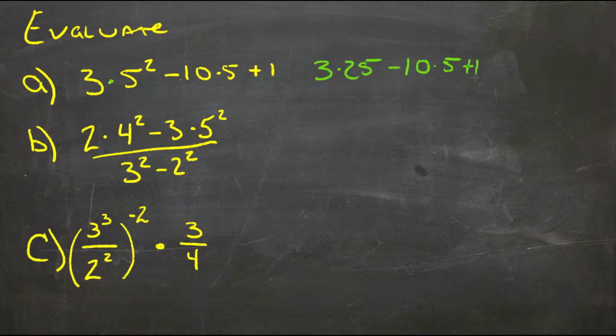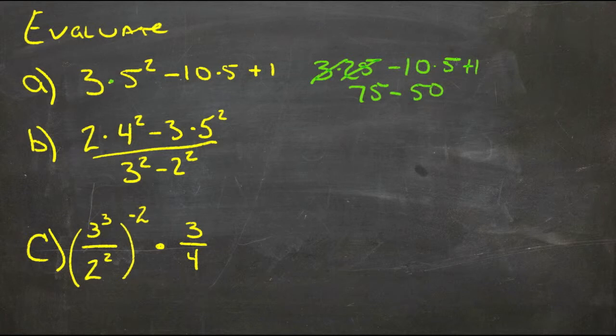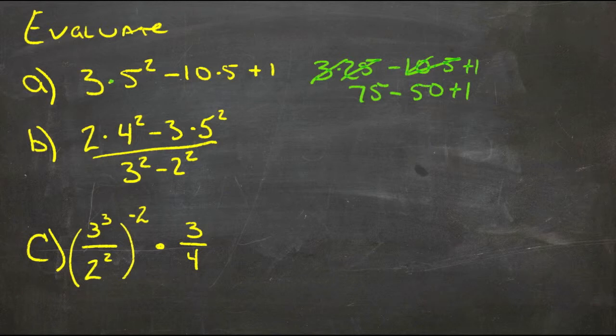So now we can go across and do all the multiplication. We have three times twenty-five is seventy-five minus ten times five which is fifty plus one. Seventy-five minus fifty is twenty-five and twenty-five plus one is twenty-six.